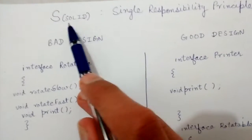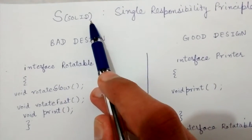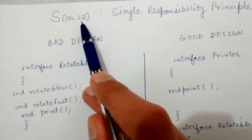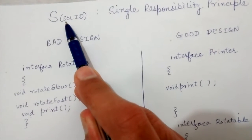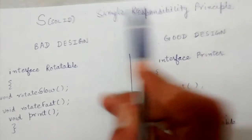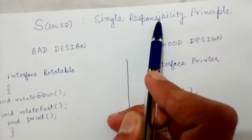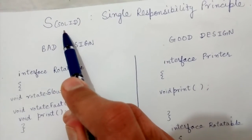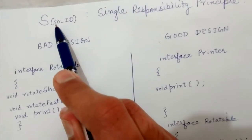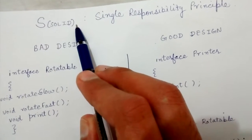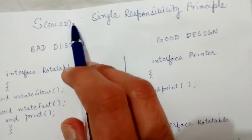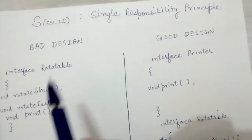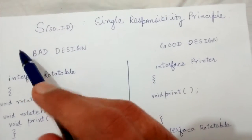Hey friends, so in object-oriented programming, this word SOLID — each letter of it is representing a principle. So these are the five most important, supposedly the most important principles of object-oriented programming design. So let's see what these principles are.